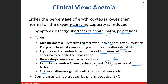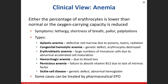Sickle cell anemia is highly prevalent in the African American community. It's a genetic defect where hemoglobin is abnormal, and the cell literally looks like a sickle. When it travels around, it can't squeeze through small spaces, so these cells get damaged quickly. Depending on severity, people with sickle cell anemia may have significant physical limitations.